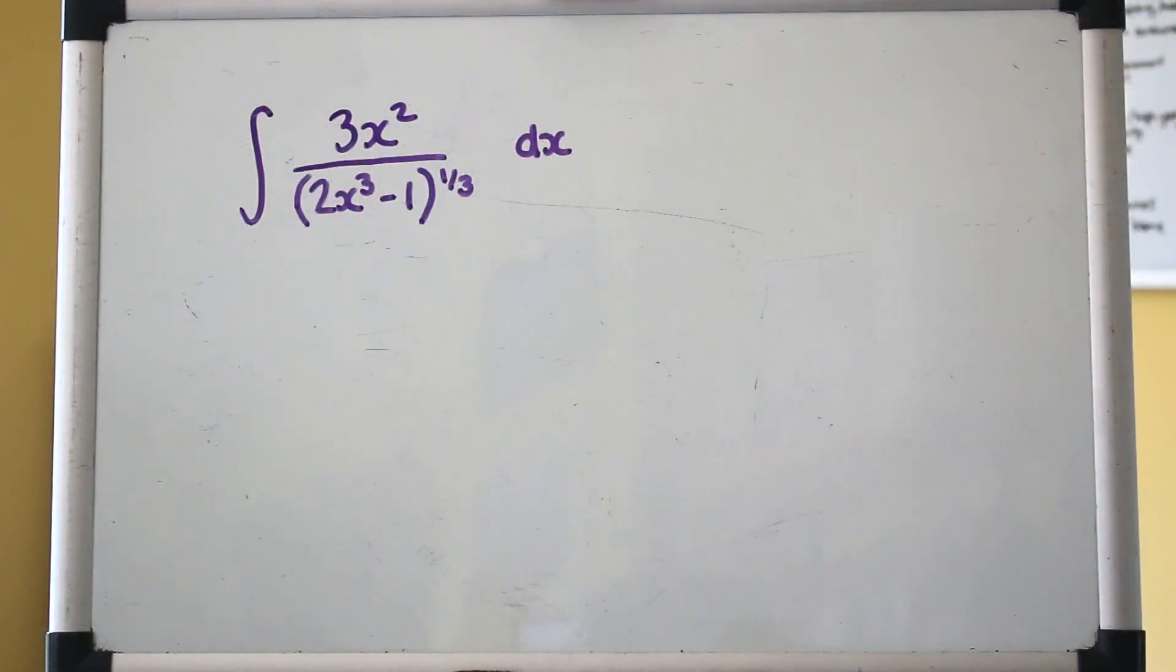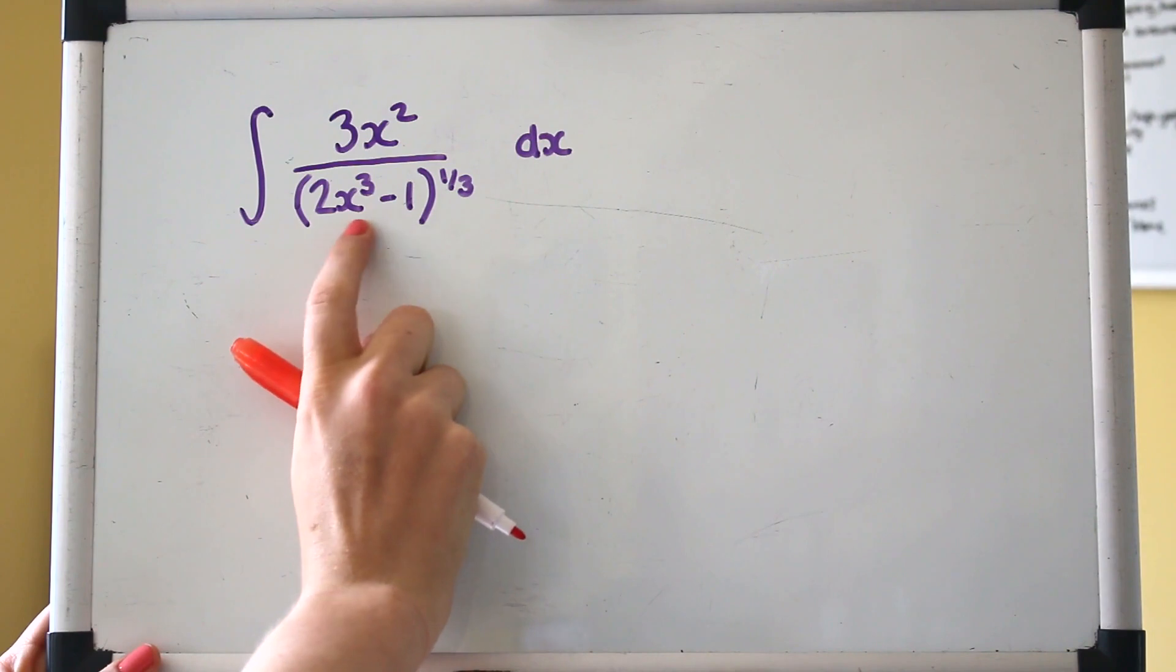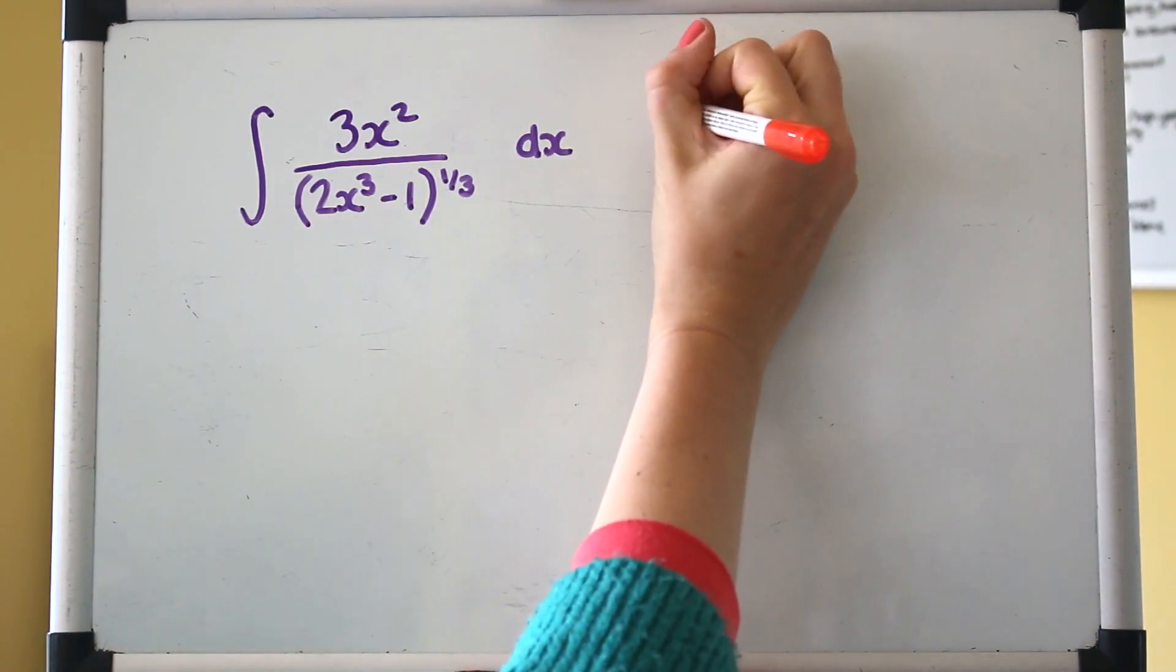Let's begin with this first example. Now this, even though it looks complicated, is something that you could integrate using the reverse chain rule. I'm not going to do that today because I'm going to show you an alternative method, integration by substitution. Often the question itself will tell you what substitution to make, but not always. Generally we use the most complex expression involved, so we'll use this denominator here, the 2x³ minus 1.